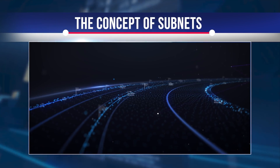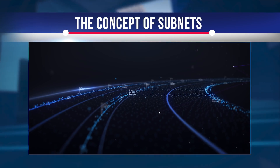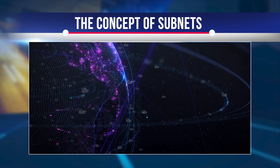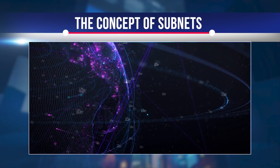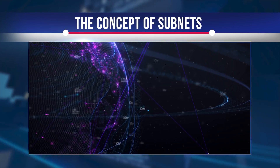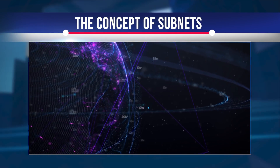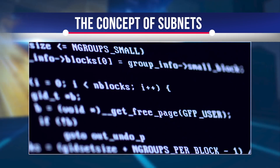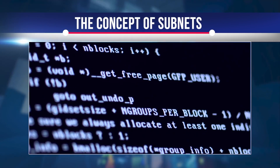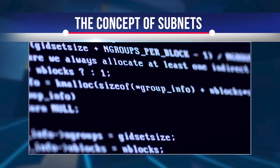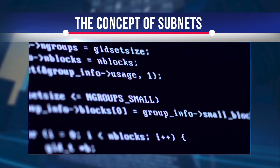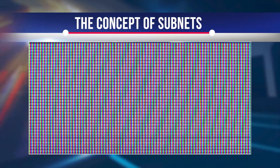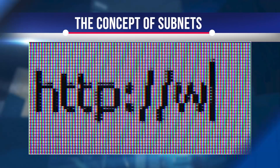Although subnets are the basic building blocks of the entire internet computer network, they are transparent to users and software. The internet computer also provides subnet transparency in other ways — the NNS can divide and merge subnets, for example, to balance the load across the entire network. It is also transparent for hosted canisters. When you load your canister into an internet computer, you have to choose a specific type of subnet. There is a specific subnet that hosts the NNS, but you cannot load your canister there. Instead, you must choose a subnet type such as data, system, or fiduciary.